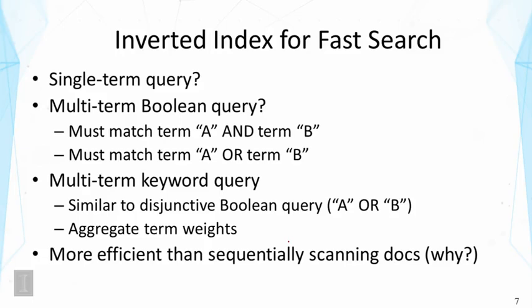What about the multi-term keyword query? We talked about the vector space model, for example, and we would match such a query with a document and generate the score. And the score is based on aggregated term weights. So in this case, it's not a boolean query, but the scoring can be actually done in a similar way. Basically, it's similar to disjunctive boolean query, basically like A or B. We take the union of all the documents that match at least one query term, and then we would aggregate the term weights. So this is the basic idea of using inverted index for scoring documents in general, and we're going to talk about this in more detail later.